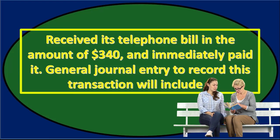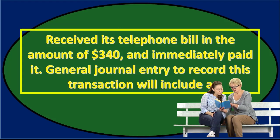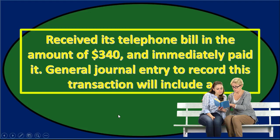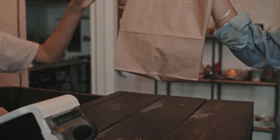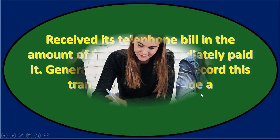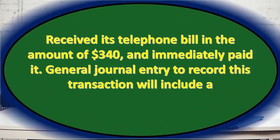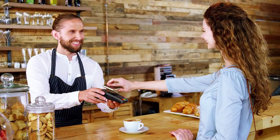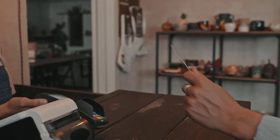Next question: received its telephone bill in the amount of 340 and immediately paid it. The general journal entry to record this transaction will include a — note that this type of question is asking for a journal entry. If this is in multiple choice format, it may only give you one side of the transaction, and you might be tempted to take a shortcut and just look for that one side. That's a trick on multiple choice questions because by doing so, you eliminate the value of the double entry accounting system, which is basically to check your work.